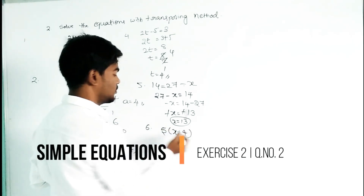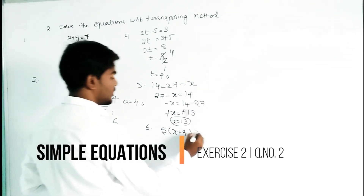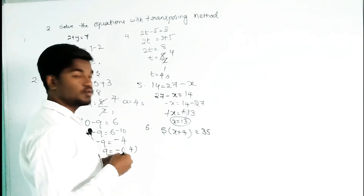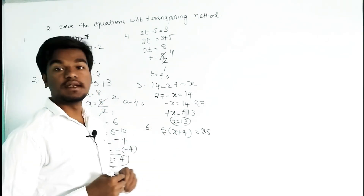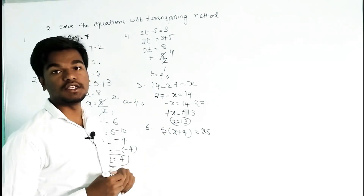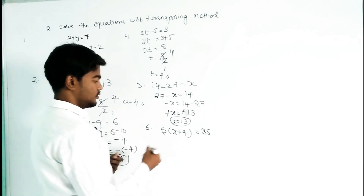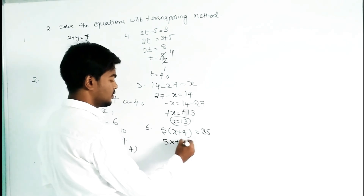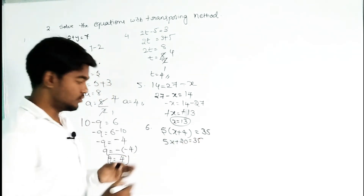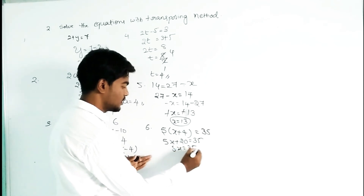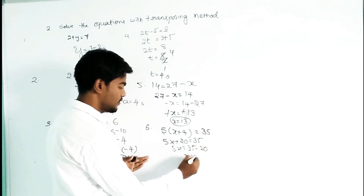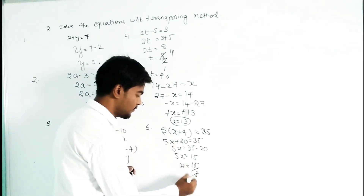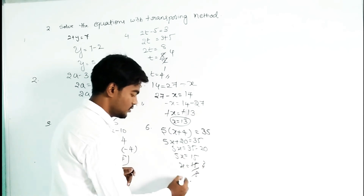Next question is 5 into x plus 4 equals 35. First apply distribution over addition: 5 times x plus 5 times 4 equals 35, giving 5x plus 20 equals 35. Transpose 20 to the right side: 5x equals 35 minus 20, so 5x equals 15. Dividing both sides by 5 gives x equals 3.